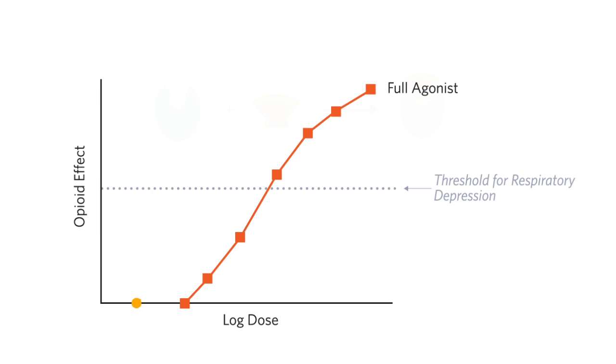As the dose of a partial opiate agonist increases, there is a ceiling effect or plateau in terms of respiratory depression, such that further increases in the dose does not result in further respiratory depression. This provides relative safety in terms of overdose risk with a partial agonist compared to a full agonist.